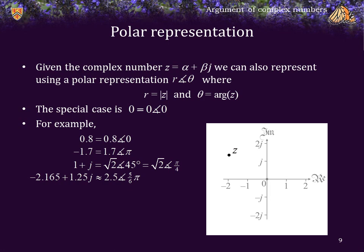-2.165 + 1.25j is approximately equal to 2.5∠5π/6, which is again also equivalent to 150°. So alternatively, you could describe this as 2.5∠150.